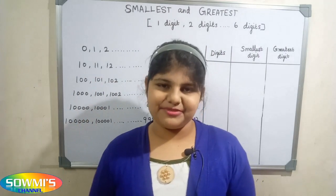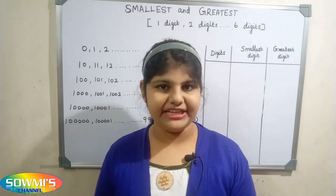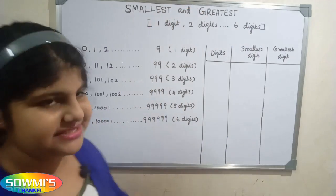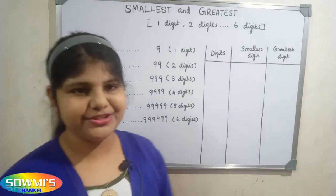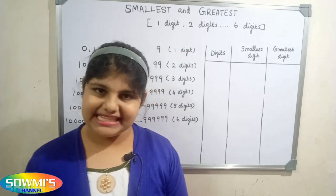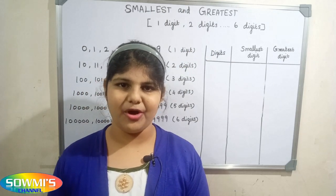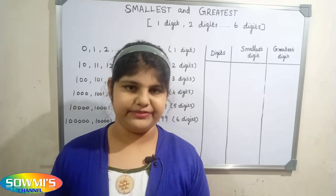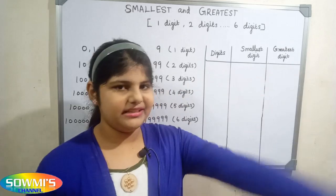Hi friends, welcome to Sommish channel. In this video we are going to see how to find the smallest and greatest number — one digit, two digit, up to six digit number. If you did not subscribe to my channel, kindly subscribe to Sommish channel and press the bell button so you can receive all my updated videos regularly.